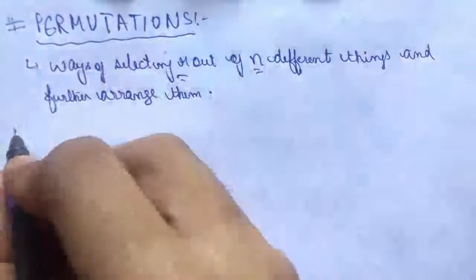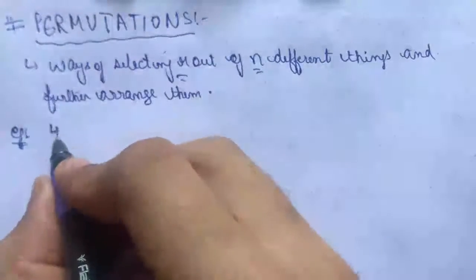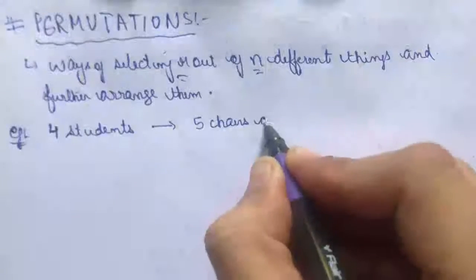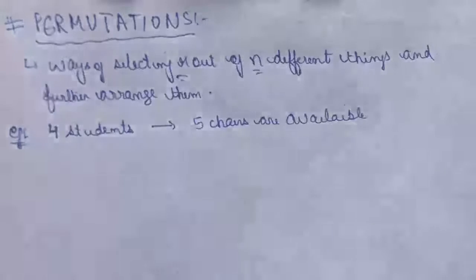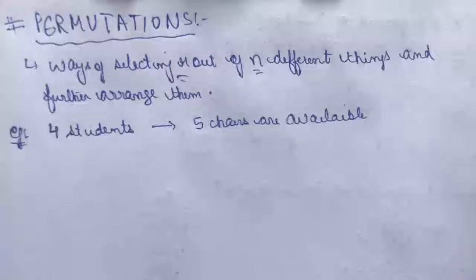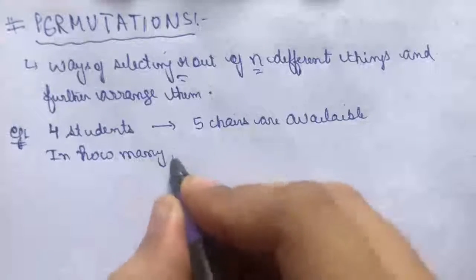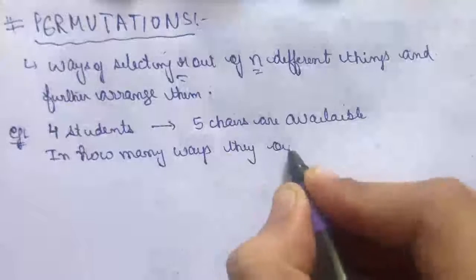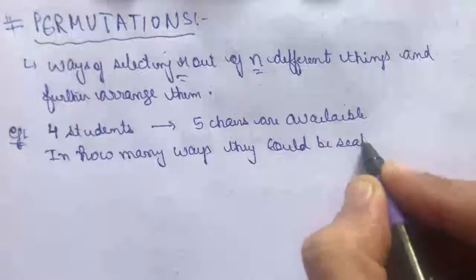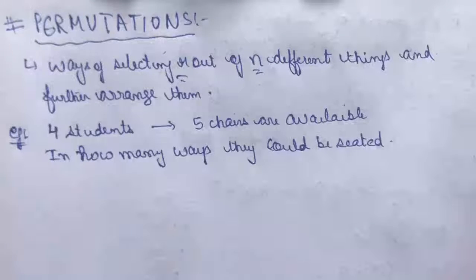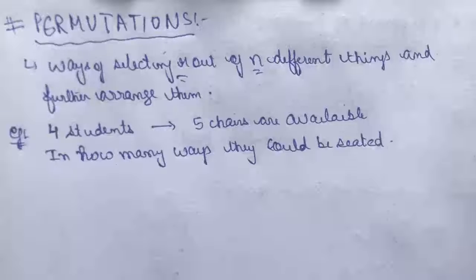For example, there are 4 students and 5 chairs available for those 4 students. In how many ways could they be seated? Now, there are 4 students and 5 chairs, so 1 chair is surely going to be vacant because the number of chairs is more than the number of students. Automatically one chair is going to be vacant. So first we will have to select any 4 out of those 5 chairs.